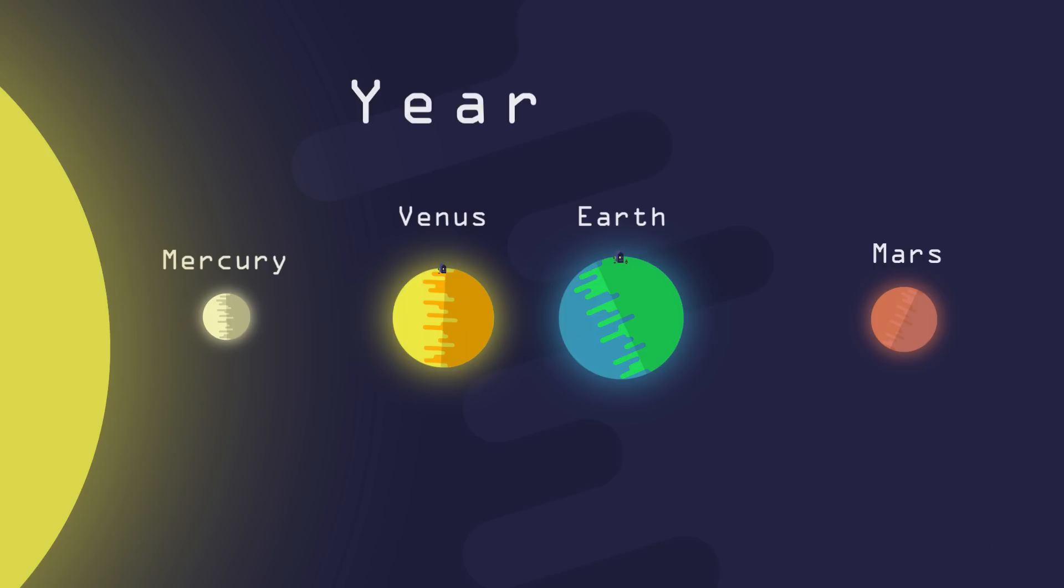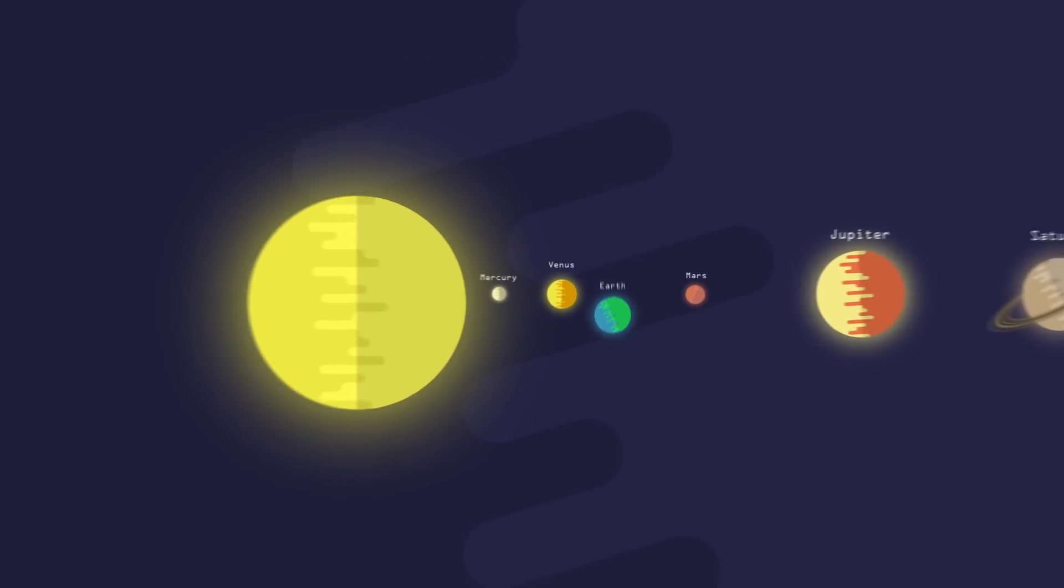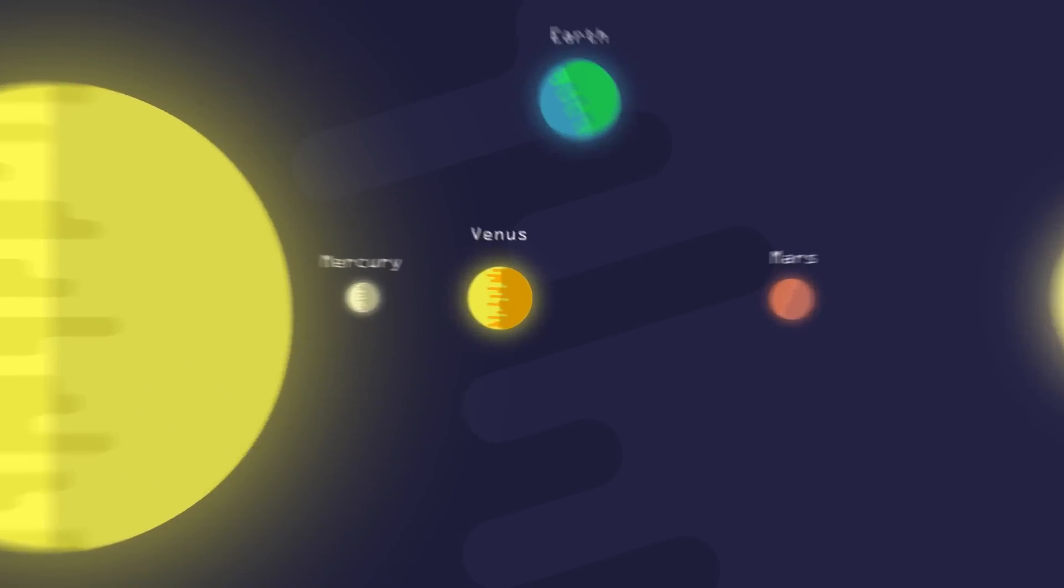But did you know that a year on Venus is shorter than a day on Venus? Let's figure out why. Our Earth calendar system is based on the rotation of our planet. What we call a day is Earth rotating once around its axis. A year is Earth orbiting once around the Sun.